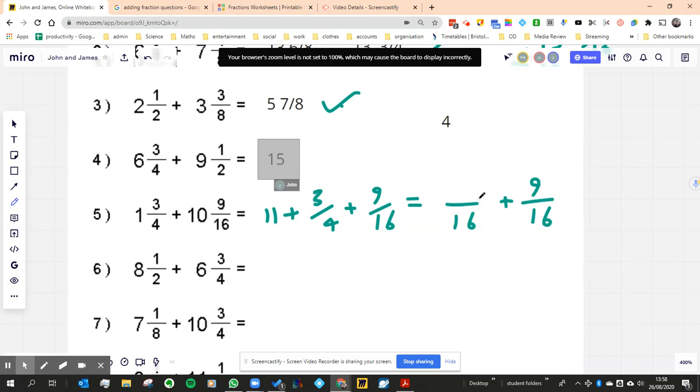So to get to what the next one is, and I need to add the 11. To get the next one, 3/4, to get to the 16, I'm going to multiply the 4 by 4, so that's going to be 12. So that's going to be 11, and then we're going to add the 12 and the 9, which is 21 over 16.